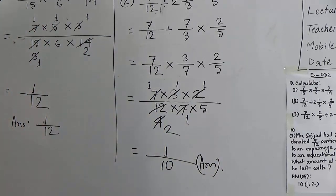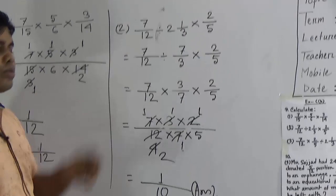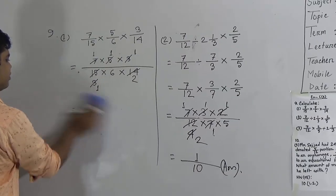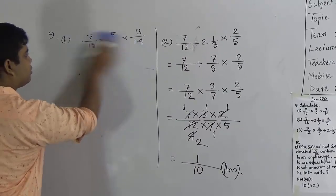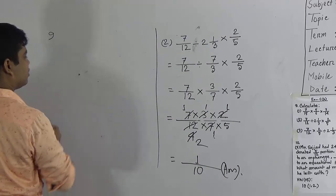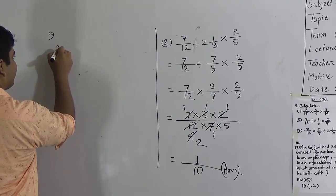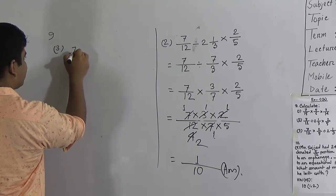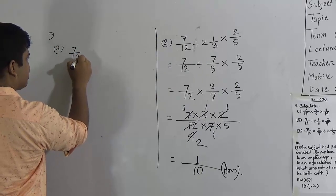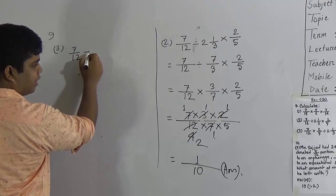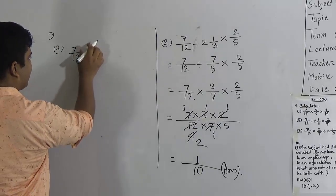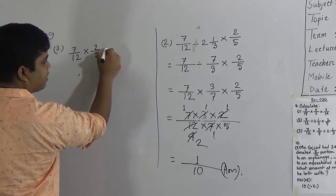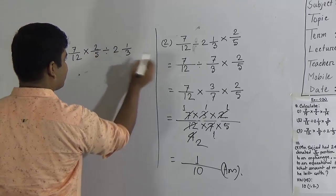My student, question number 3 is similar to question number 2. We solve question 3 now. First of all, we pick up the question: 7 by 12, multiplied by 2 by 5, divided by 2 and 1 by 3 — similarly as question number 2.